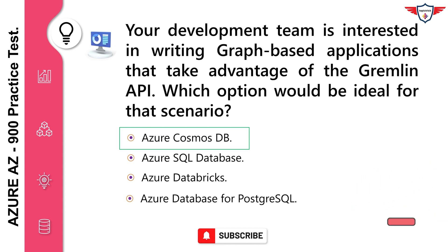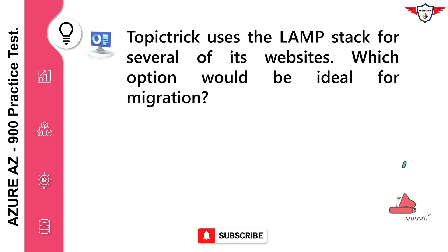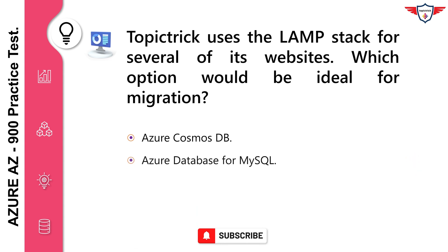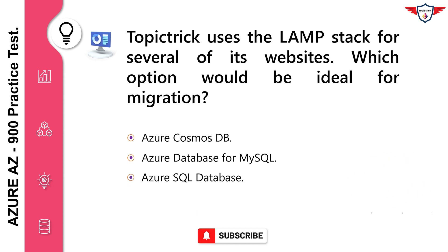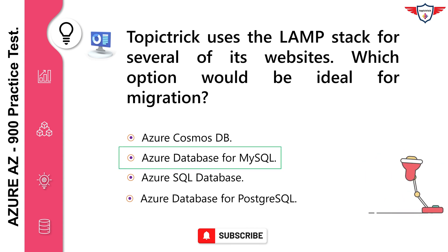Topic Trick uses the LAMP stack for several of its websites. Which option would be ideal for migration? Azure Cosmos DB, Azure Database for MySQL, Azure SQL, Azure SQL Database, Azure Database for PostgreSQL. The correct answer is Azure Database for MySQL. Azure Database for MySQL is the logical choice for existing LAMP stack applications.